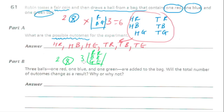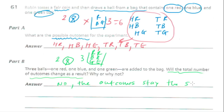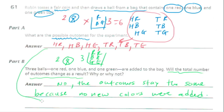So our outcomes are still going to be the same: head and red, head and blue, head and green, tails and red, tails and blue, tails and green. Nothing else changed — we didn't add any different colors. So the total number of outcomes will not change. The outcomes stay the same because no new colors were added. Our list is still going to be the same.